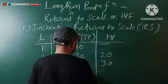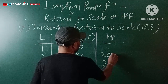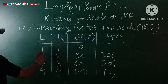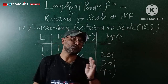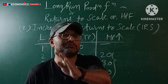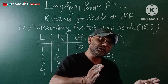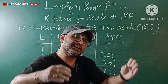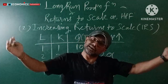In the numerical example: output goes from sixty to one hundred, then increases further. Both factors increase at the same rate, but output increases by more than that rate. For IRS, the output increases more than proportionately compared to the factor increase.